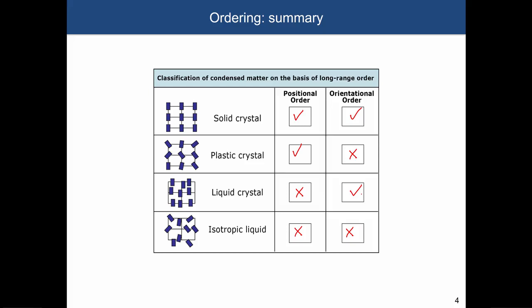There are two classes of materials that live between these two worlds. The first are plastic crystals — they have long-range translational order, meaning we can predict the position of molecules within the crystal, but we cannot predict their orientation. This is driven by the fact that these molecules are usually spherical, so they can rotate around their axis. Plastic crystals exist but are not necessarily technologically important.